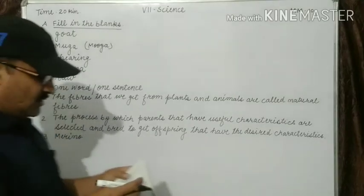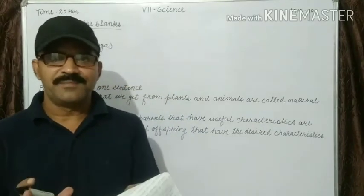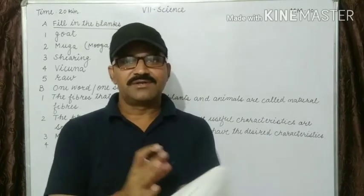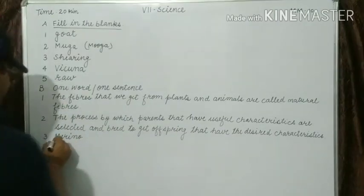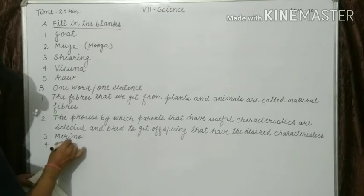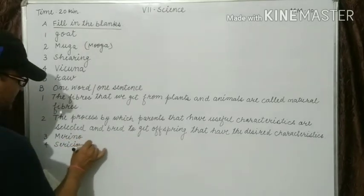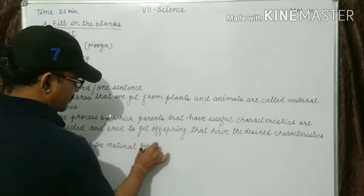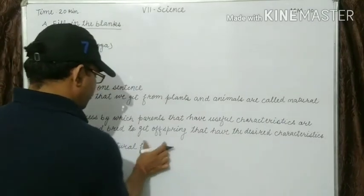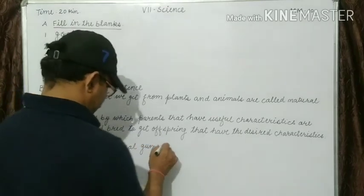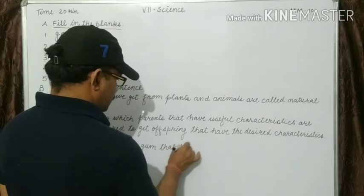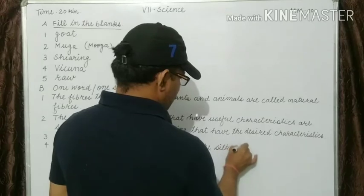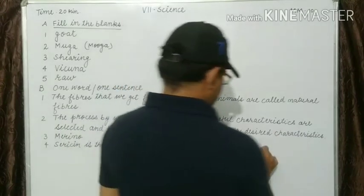Next: what is sericin? Sericin is the natural gum that holds the silk fibers together. It is the natural gum that holds the silk fiber together — that is known as sericin.